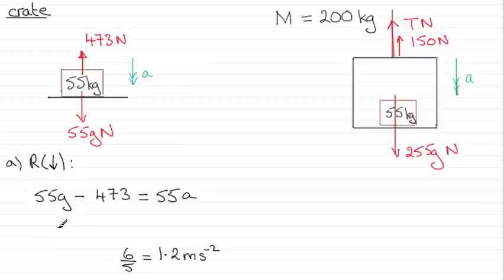And if you rearrange this, you'll find that 55 times g, g is 9.8, minus 473, that comes to 66. And so you've just got to divide 66 then by 55. And that reduces down to 6 over 5, which is 1.2. 1.2 meters per second squared.